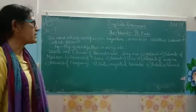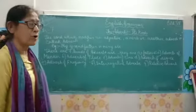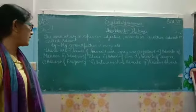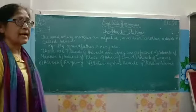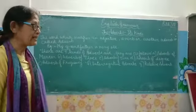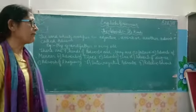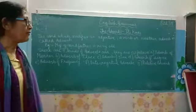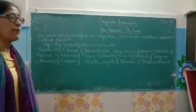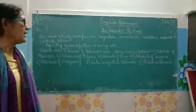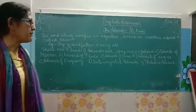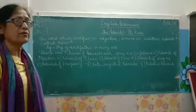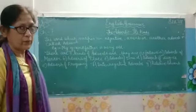There are seven types of adverbs and they are as follows: the first is adverb of manner, second adverb of place, third adverb of time, fourth adverb of degree, fifth adverb of frequency, interrogative adverbs, and lastly we have the relative adverbs.